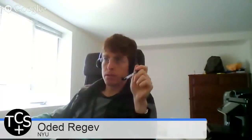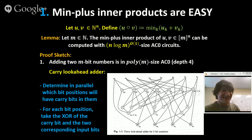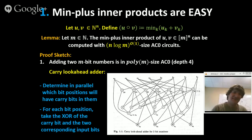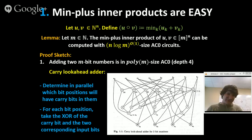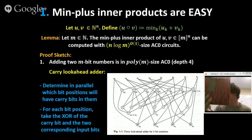To determine if x ≤ y: x ≤ y if and only if either all bits of x and y are equal, or for some position i the first i−1 bits of x and y are equal but x_i = 0 and y_i = 1. You can compute all this in parallel and take the OR. Then a number x_i is the minimum of a bunch of numbers if and only if AND over all j of (x_i ≤ x_j) is true. This involves a constant number of layers of ANDs, ORs, NOTs, and XORs — all in AC⁰.